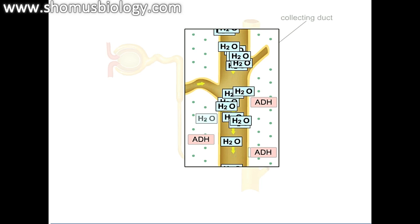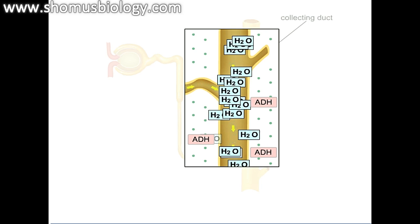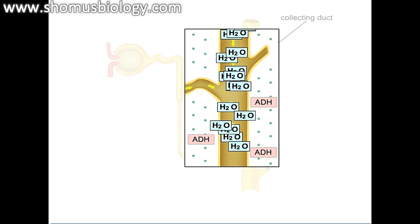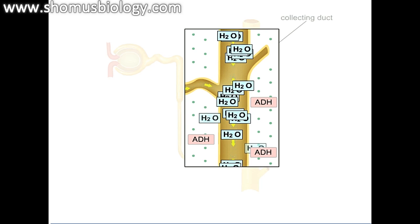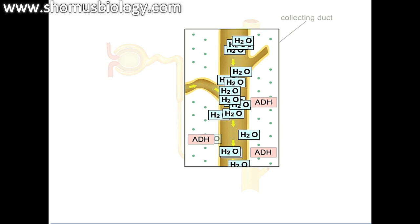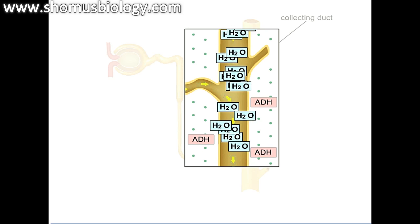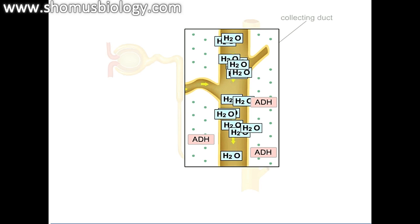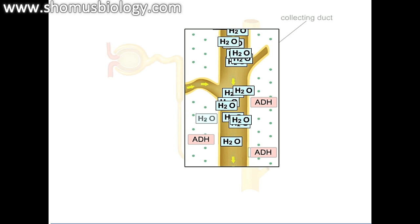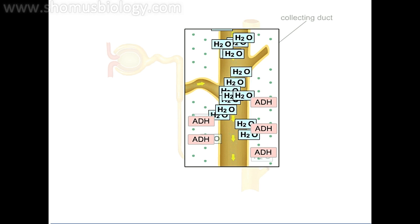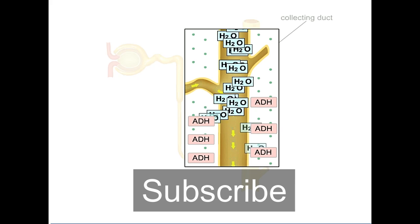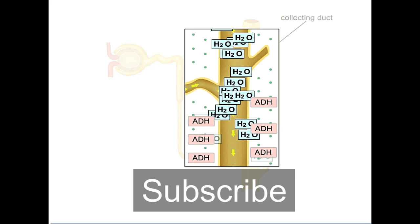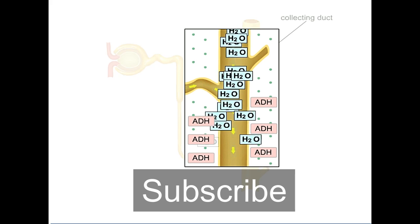On a hot dry day when you are not properly hydrated, your body's solute concentration increases. Your kidneys increase water reabsorption to help dilute the blood and maintain homeostasis. Your pituitary gland releases more anti-diuretic hormone, making the wall of the collecting duct more permeable to water. As a result, the body retains more water in the blood, and the urine that leaves the collecting duct is very concentrated.